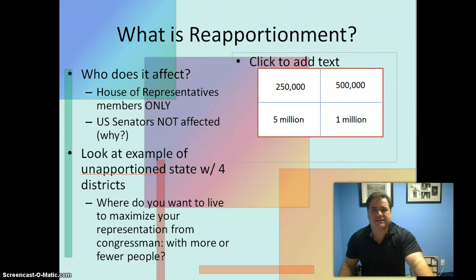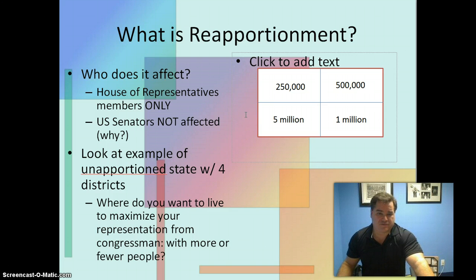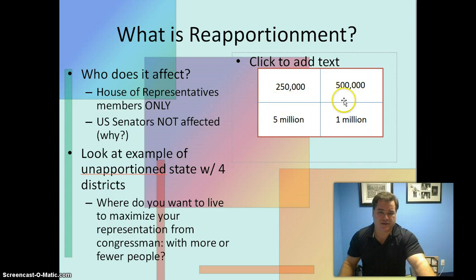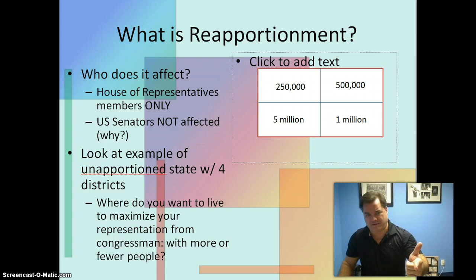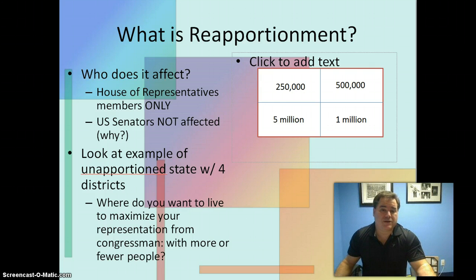Let's say this rectangle is a state. Now let's say that the 6,750,000 people that live in this state have never enjoyed reapportionment of their districts to reflect where people live. What you might end up with is a situation where in one congressional district there are 250,000 people, another has 500,000, another has one million, and the fourth district has five million people living in it.